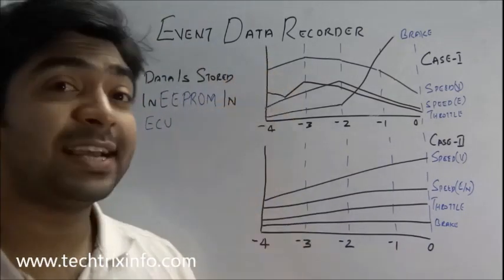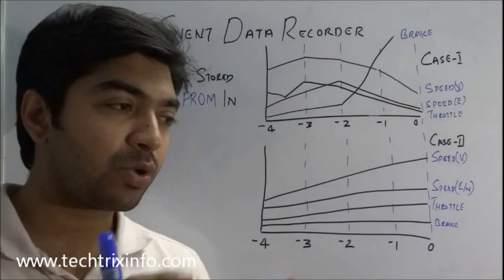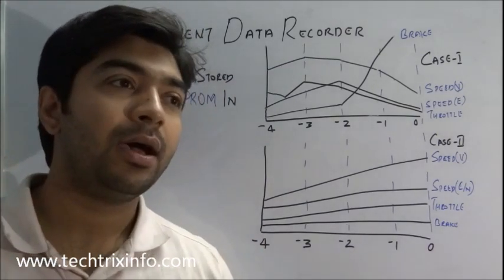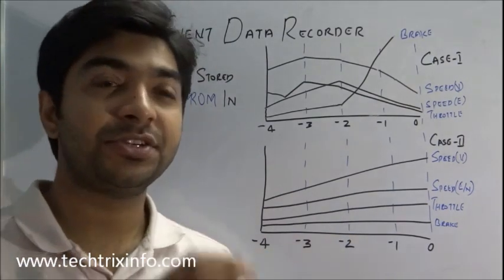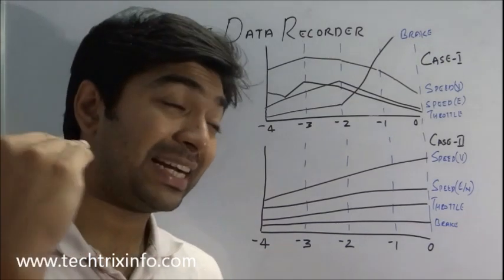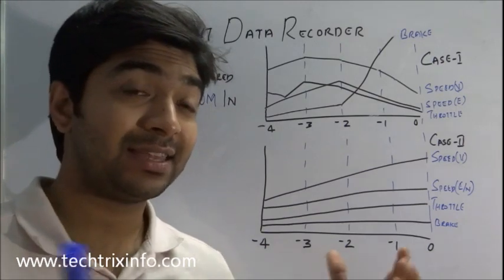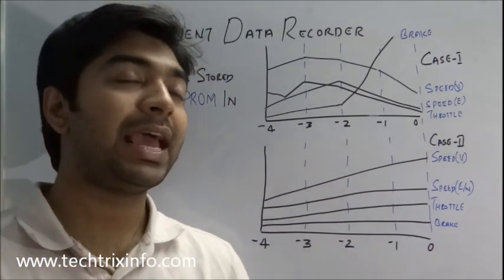It's called the event data recorder. Same as in aeroplanes that we have the black box which stores the critical data in an aeroplane and even after a crash the black box will be in safe condition so that we can get the technical data from the black box and see was that a technical failure or any other thing which resulted in the crash or the accident of an aeroplane.